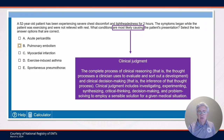With the model defined, let's talk about what clinical judgment is. Clinical judgment is the complete process that a clinician uses to reason and make decisions about an EMS incident. Clinical judgment includes investigating, experimenting, synthesizing, using critical thinking, decision making, and problem solving to employ a sensible solution for a medical emergency.